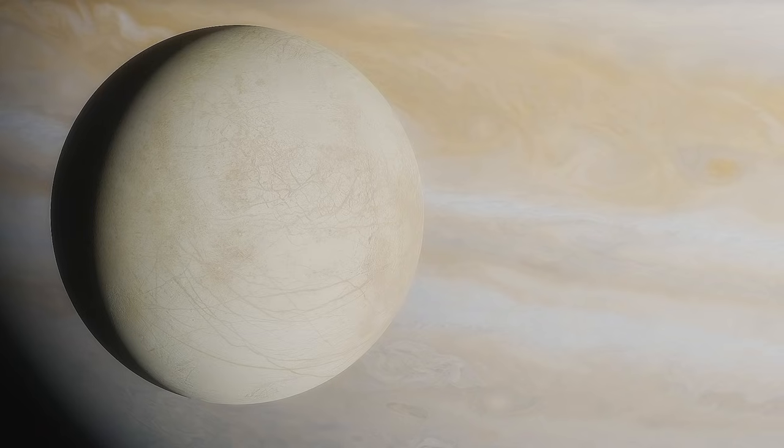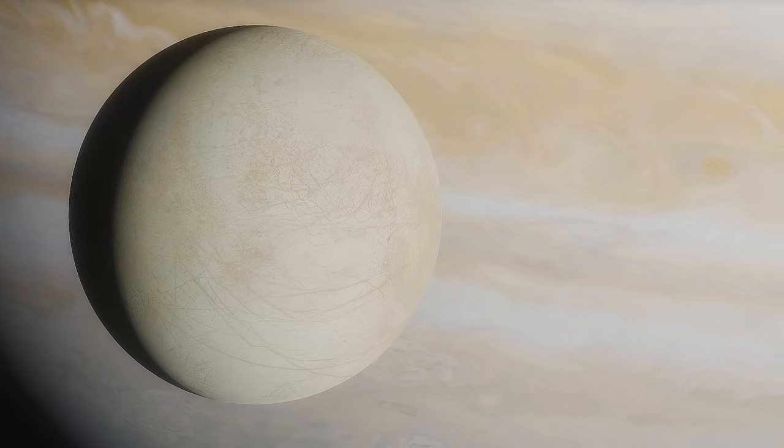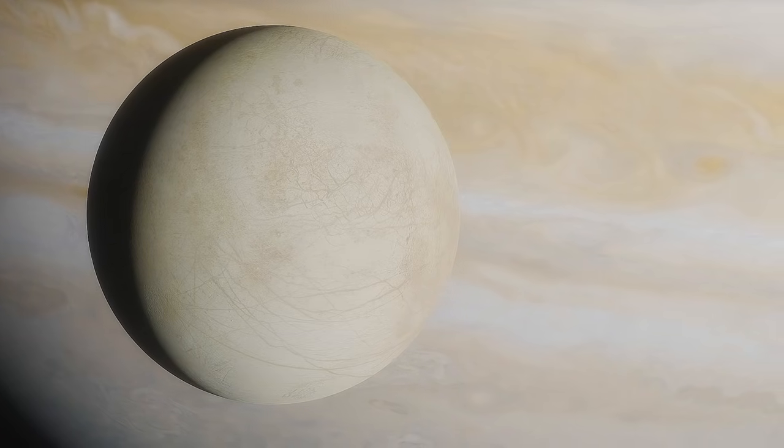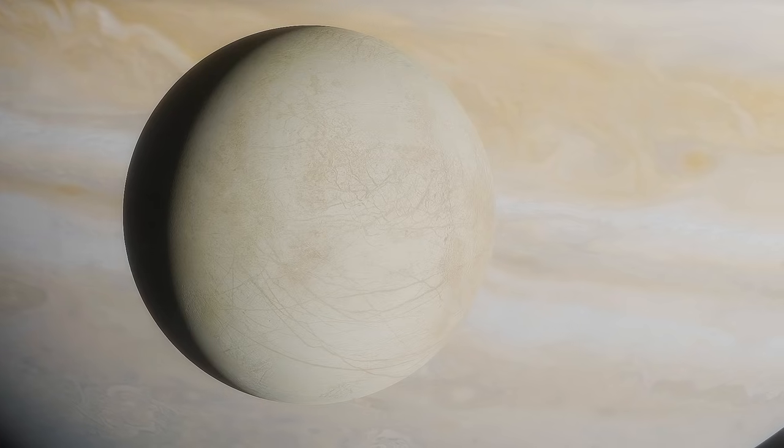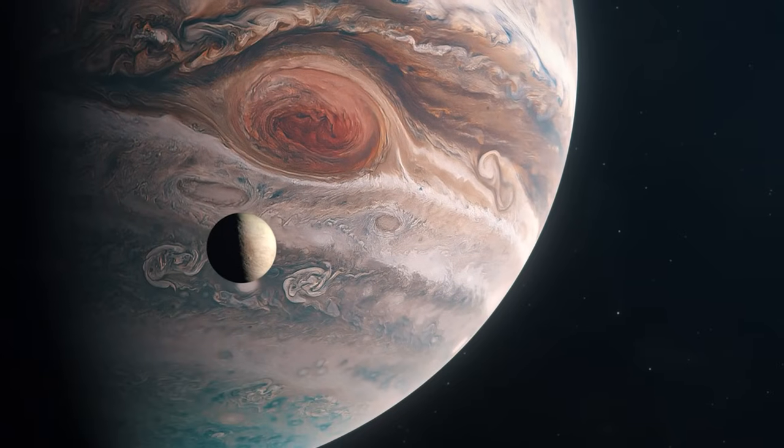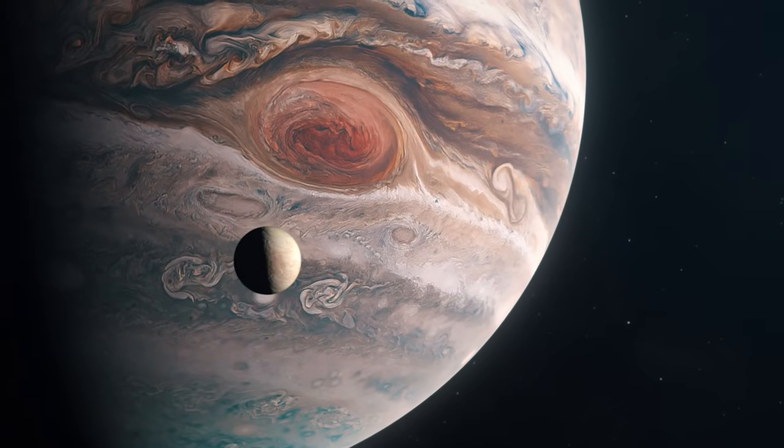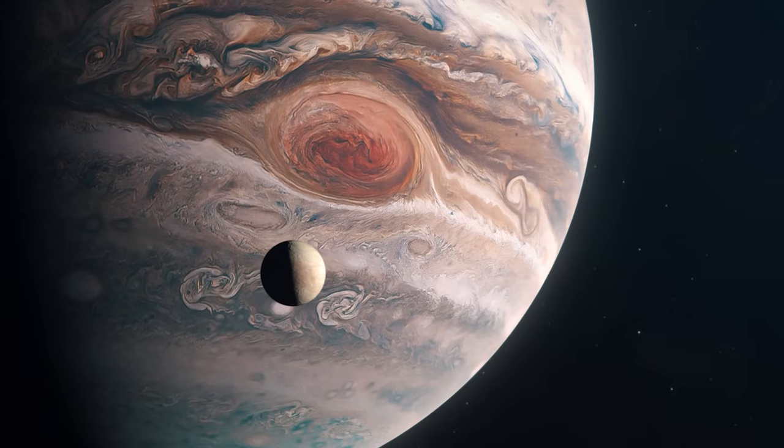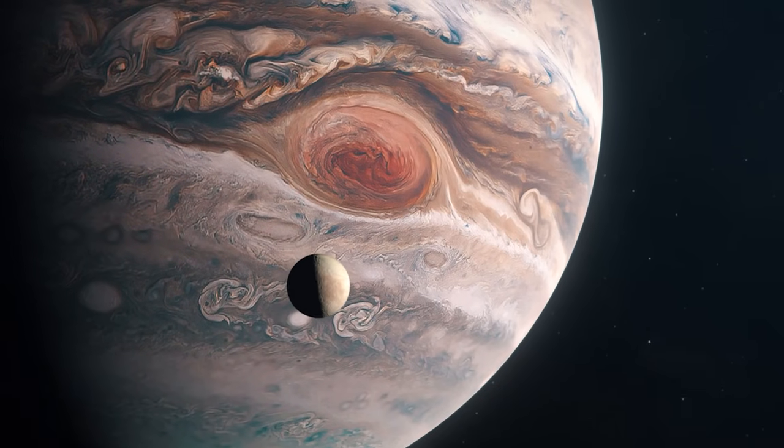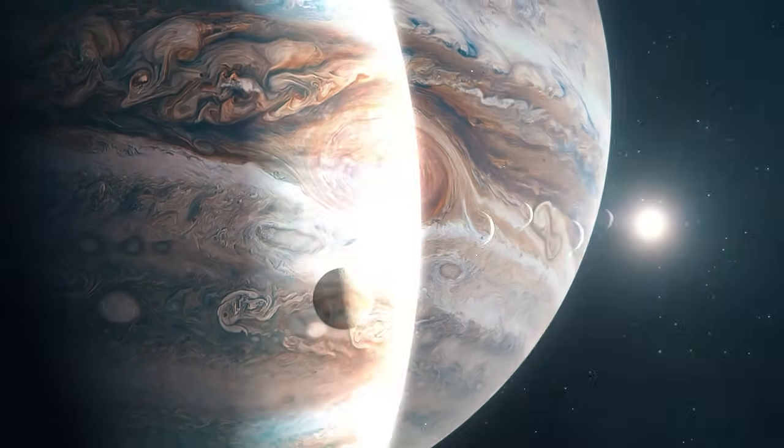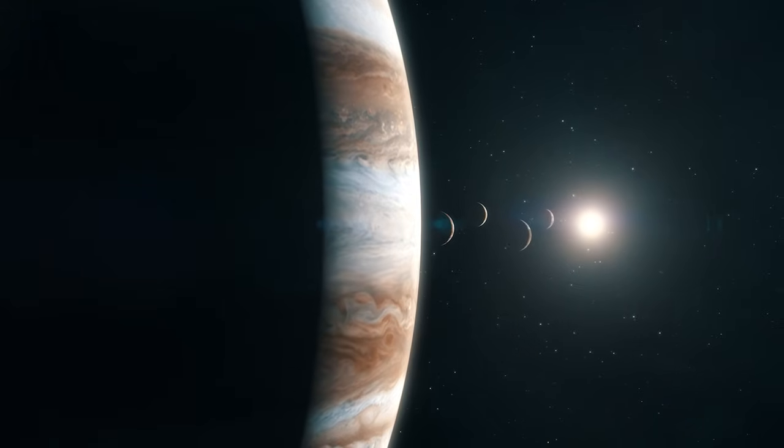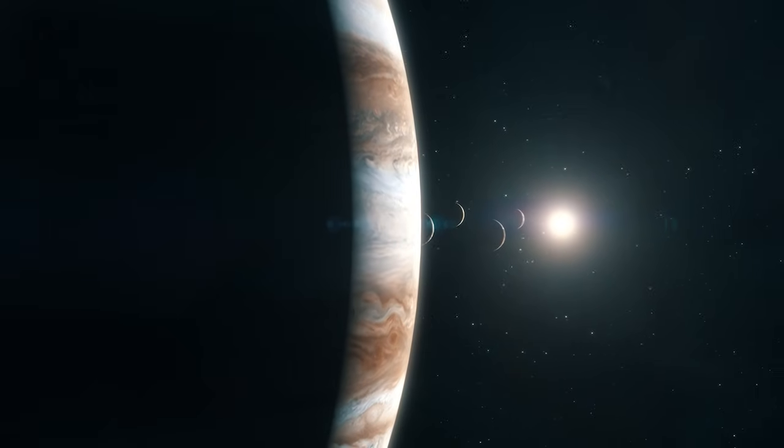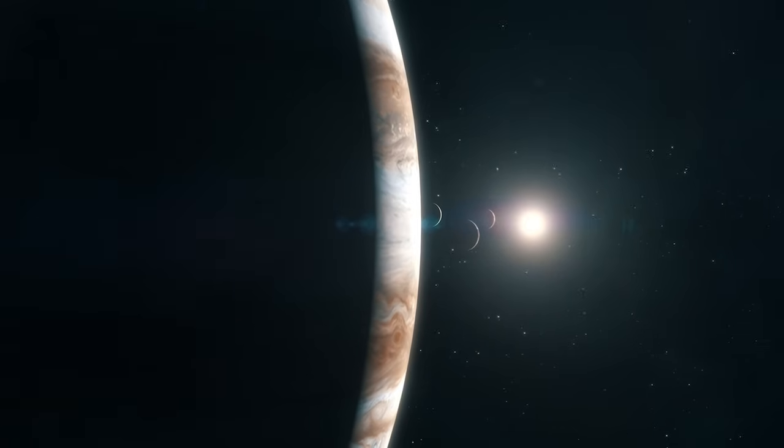Europa, with an approximate diameter of 3000 km, is the second smallest of the four Galilean moons and the sixth largest in the solar system. Jupiter's orbit requires more than 3.5 days. This is due to the slightly elliptical orbit of Europa. The first three Galilean moons, Io, Europa, and Ganymede, are bound in a 4 to 1 orbital resonance due to their mutual gravitational pull. In other terms, Ganymede orbits Jupiter twice, Europa and Io four times.